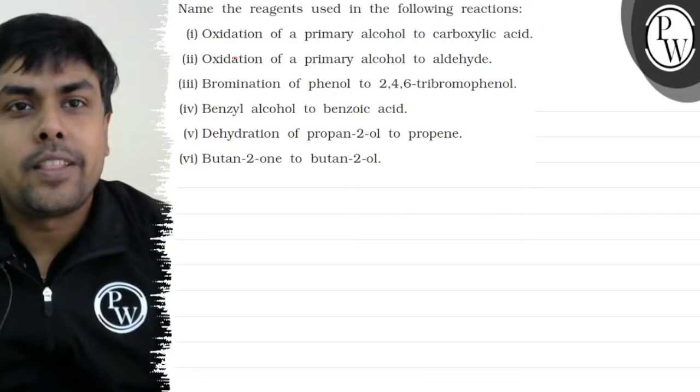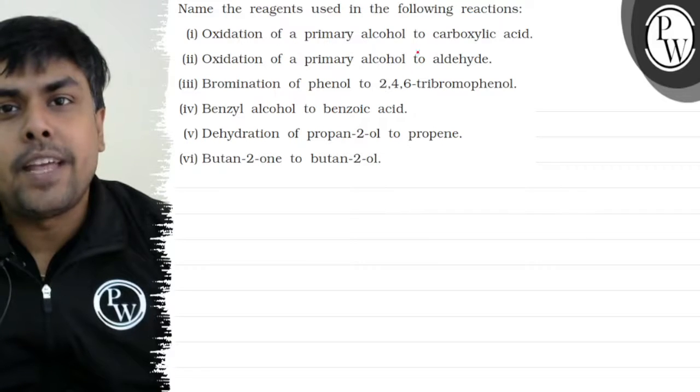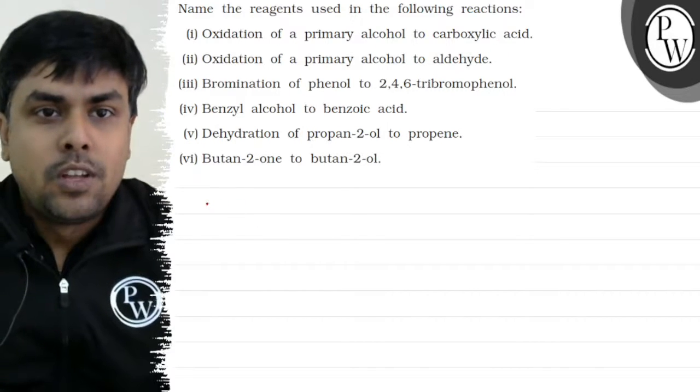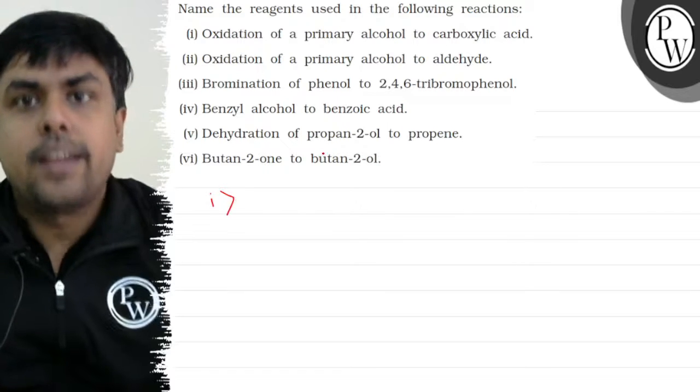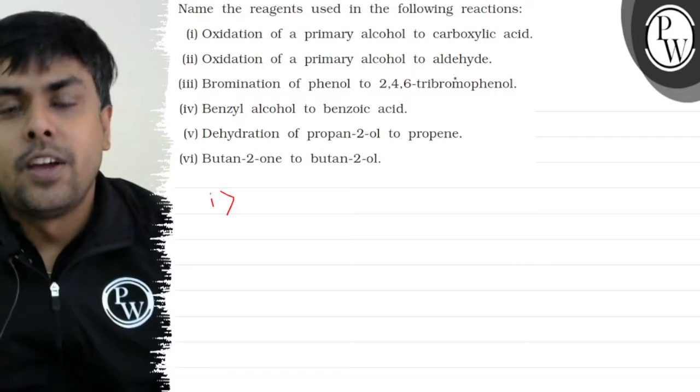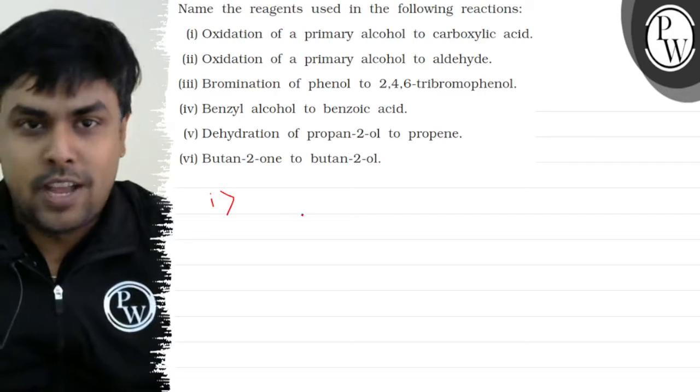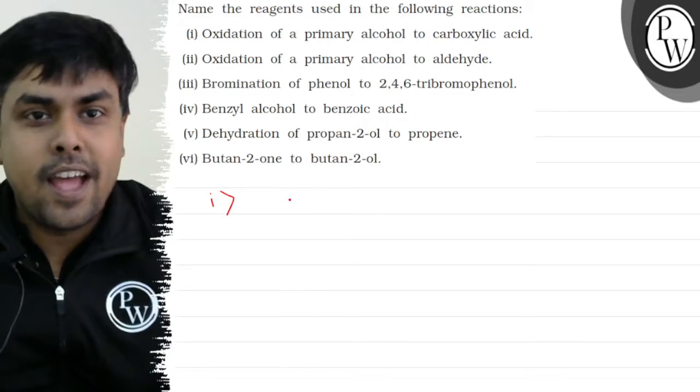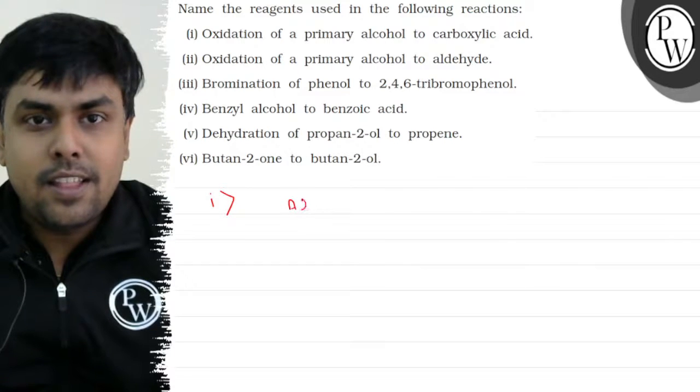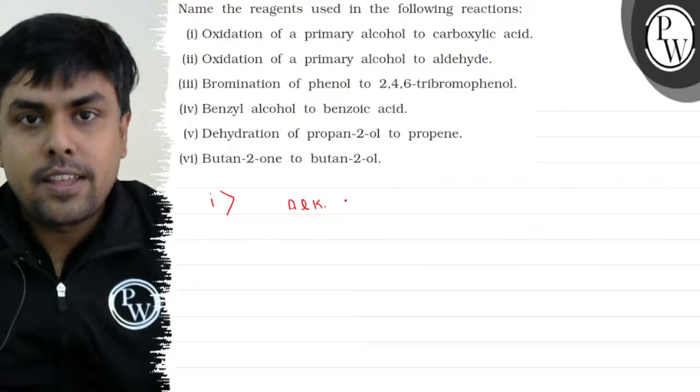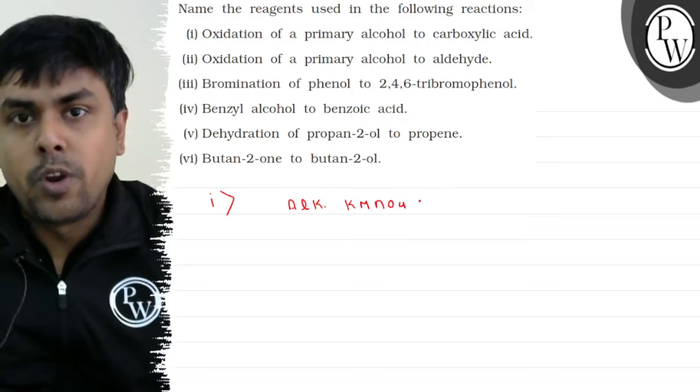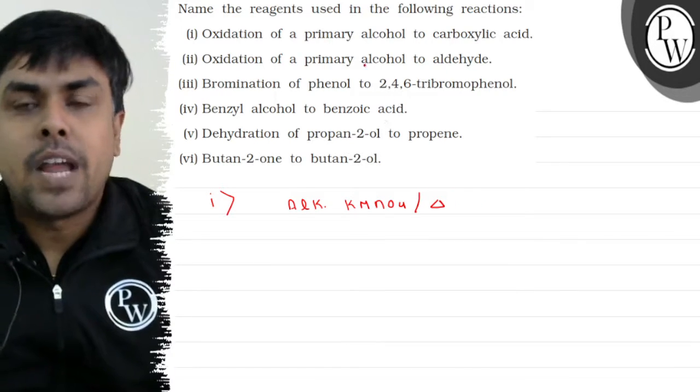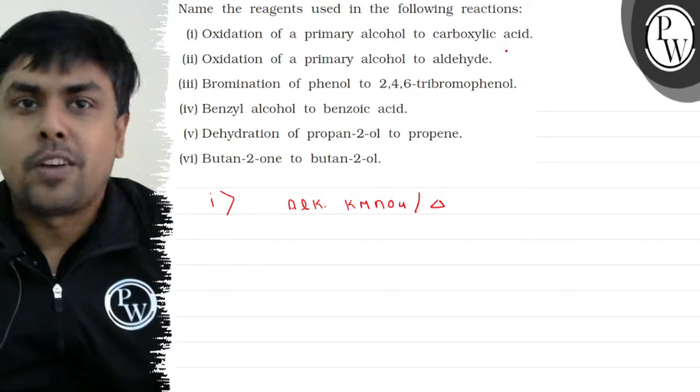Reaction number 1: Oxidation of primary alcohol to carboxylic acid. When I convert primary alcohol into acid, I will use a strong oxidizing agent. I can have alkaline KMnO4 with heat. I will get primary alcohol to carboxylic acid.